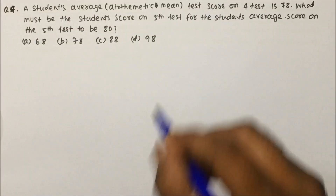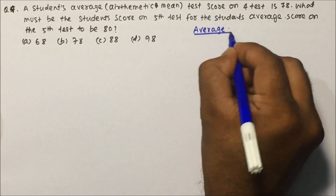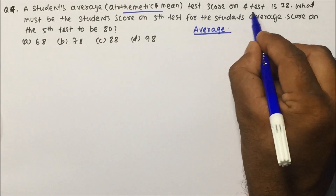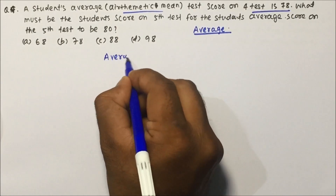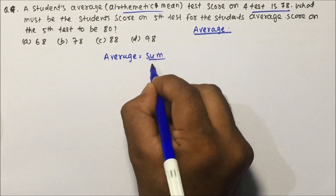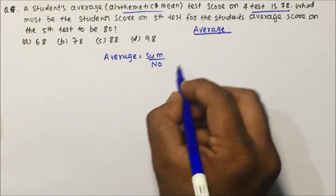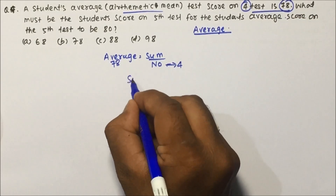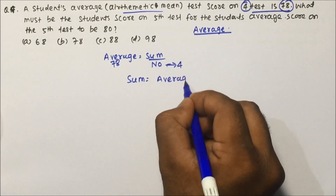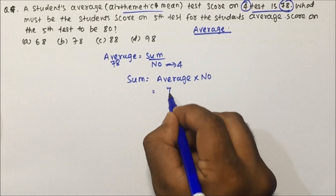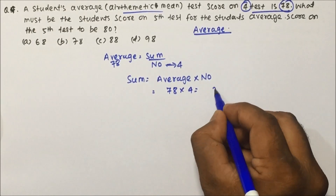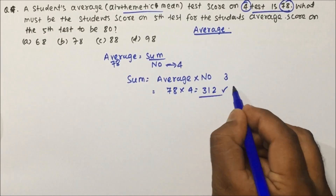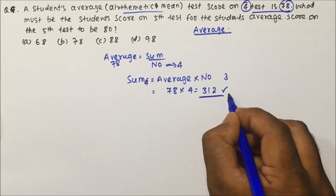Let's move to question number four, again a question on averages. A student's average test score on 4 tests is 78. Using the formula: sum = average × number, we get sum of 4 test scores = 78 × 4 = 312. The question asks: what must the student score on the 5th test so that the average score becomes 80?